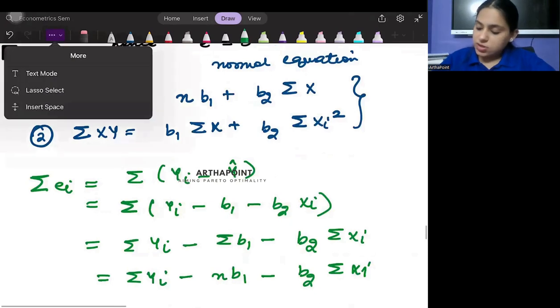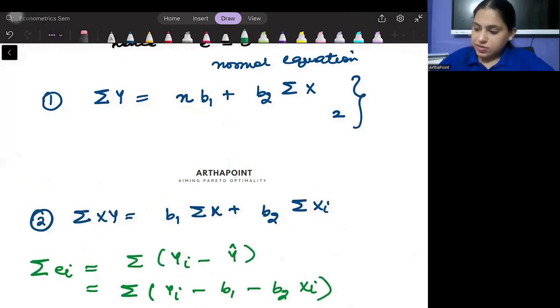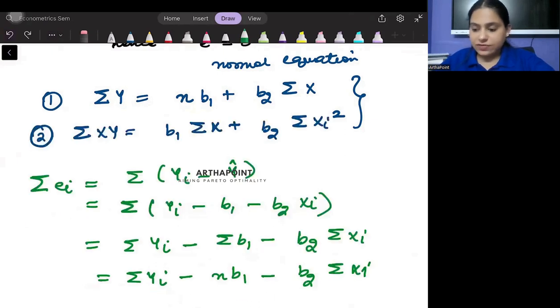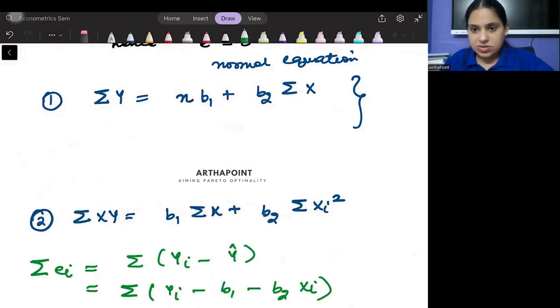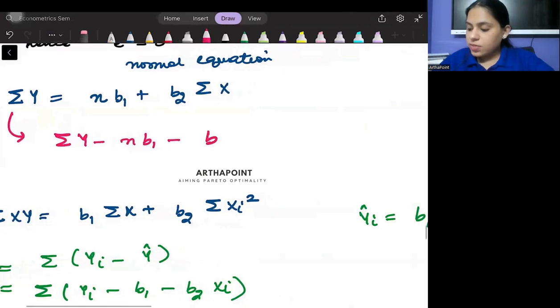Now just refer to the first normal equation. So if I just rewrite the first normal equation that I have written here, because these two normal equations we achieved by minimizing the OLS by minimizing the sum of the square of the error terms. So from this normal equation we know that summation y minus n b1 minus b2 summation xi will be 0.